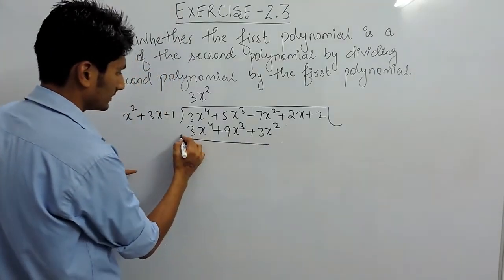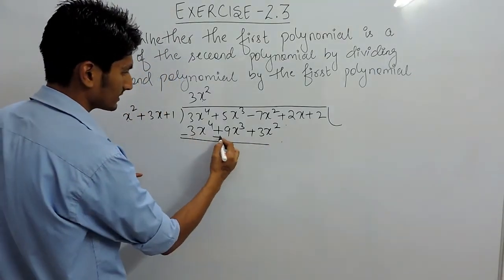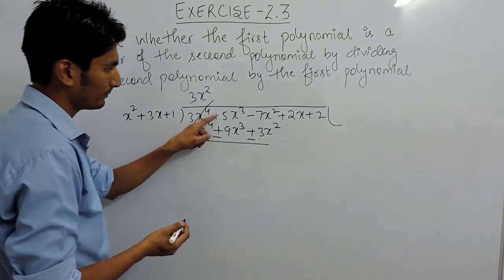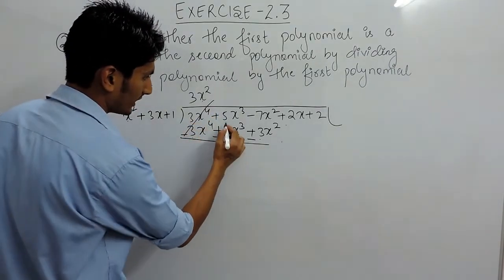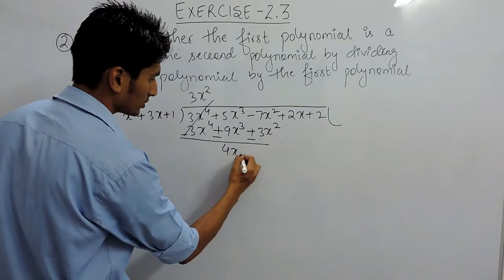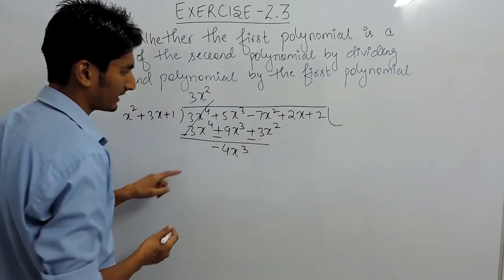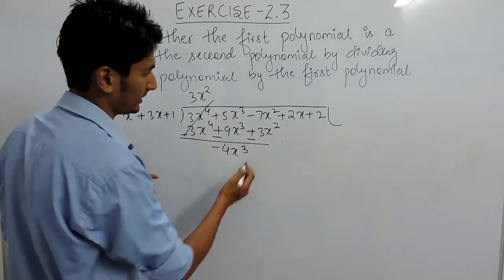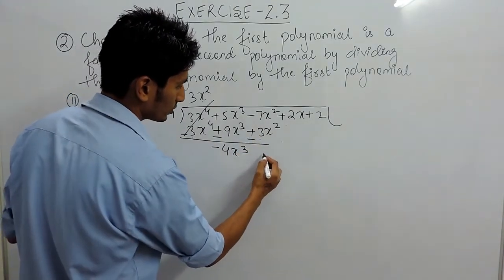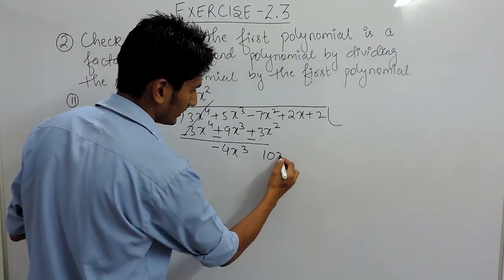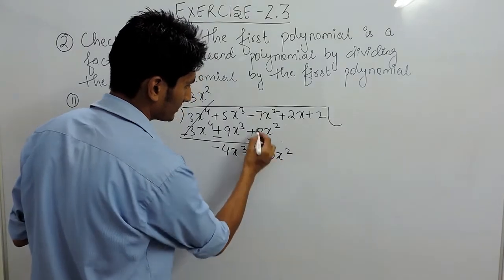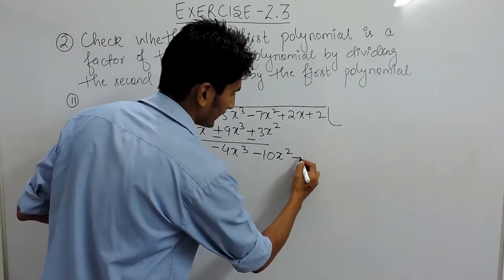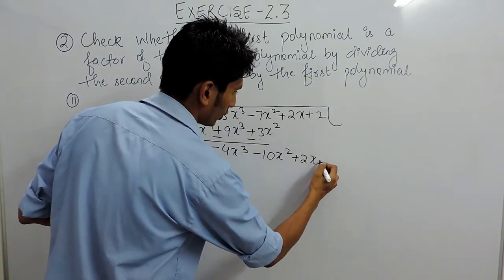You have to subtract this — this is minus, this is minus, this is minus. Plus minus is cancelled out. Plus minus is minus. So, 9 minus 5 is 4x cube with negative sign, because the greater value has a negative sign. And this minus minus is plus. So, 7 plus 3 is 10x square with negative sign — again, greater value. And this minus plus 2x can be copied here.